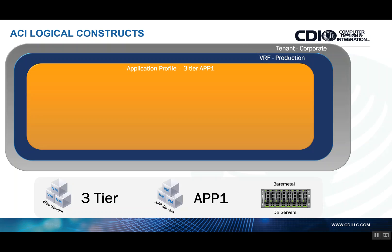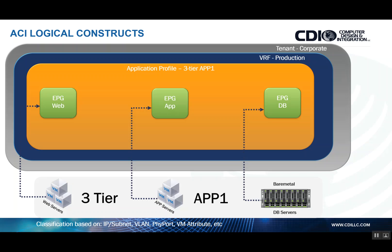After defining the VRF, we can start creating the application network profiles. In this case, I have my three-tier application one profile. Within that profile, you create your EPGs — endpoint groups — which are a grouping of common services that make up the application. In this case, an EPG for web, an EPG for app, and an EPG for database. We can classify our endpoints through various ways, such as based on IP address, subnet, VLAN, physical port, or VM attribute, with the goal of grouping common components together so they can apply any given policy as a group versus individually.